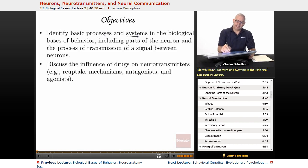Identify the basic processes and systems in all the biological bases of behavior, including the neuron and the transmission of a signal. Also, taking a look at drugs on neurotransmitters and their effects, including reuptake mechanisms, antagonists, and agonists. So from the College Board catalog of this course, this is what we're going to be looking at in this segment.